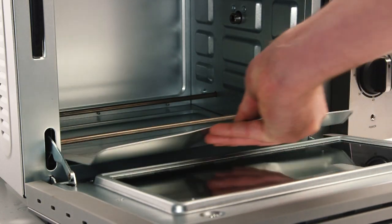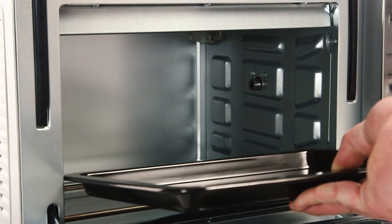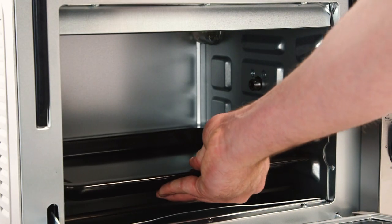Slide the crumb tray underneath the lower heating element. Next, slide the grill rack and baking tray onto the rack supports.